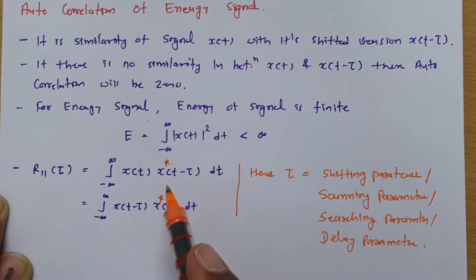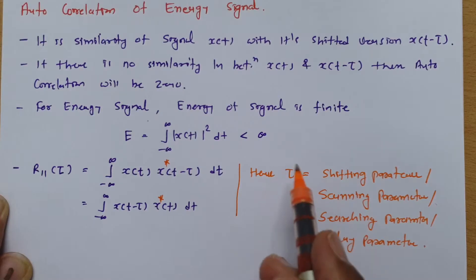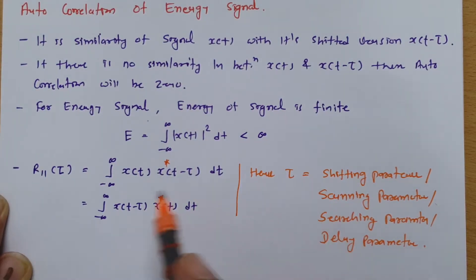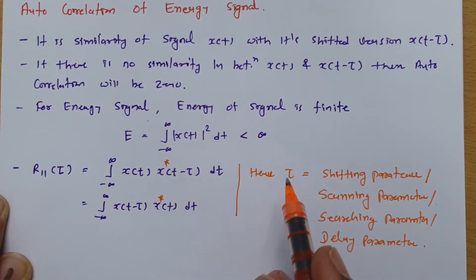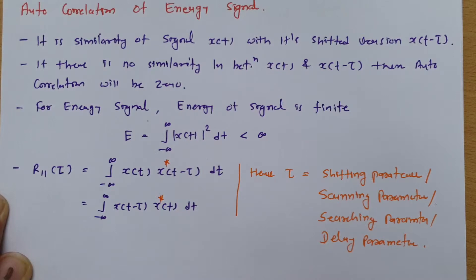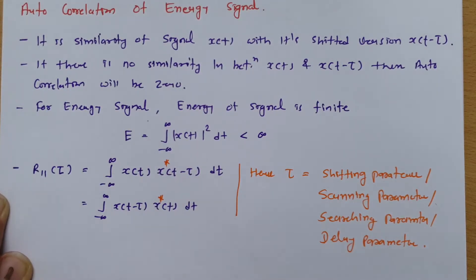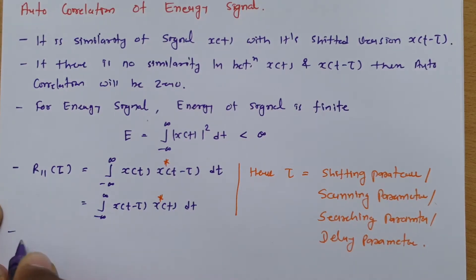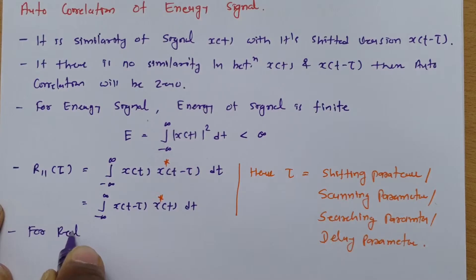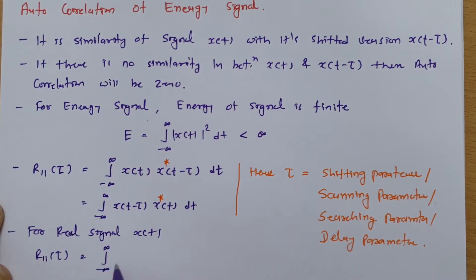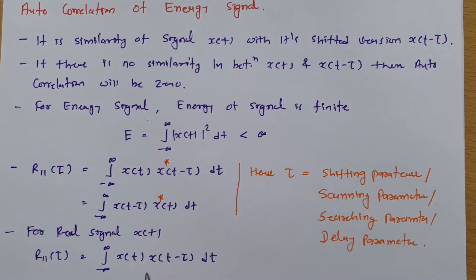If you have a reference at t equals zero, then you delay the signal by τ — that is why it is called the delay parameter or searching parameter. Autocorrelation is affected by changing the value of τ, and we will discuss this in the properties of autocorrelation. For a real signal, you don't need to consider the conjugate; the autocorrelation is simply the integral from minus infinity to infinity of x(t) multiplied by x(t minus τ) dt.